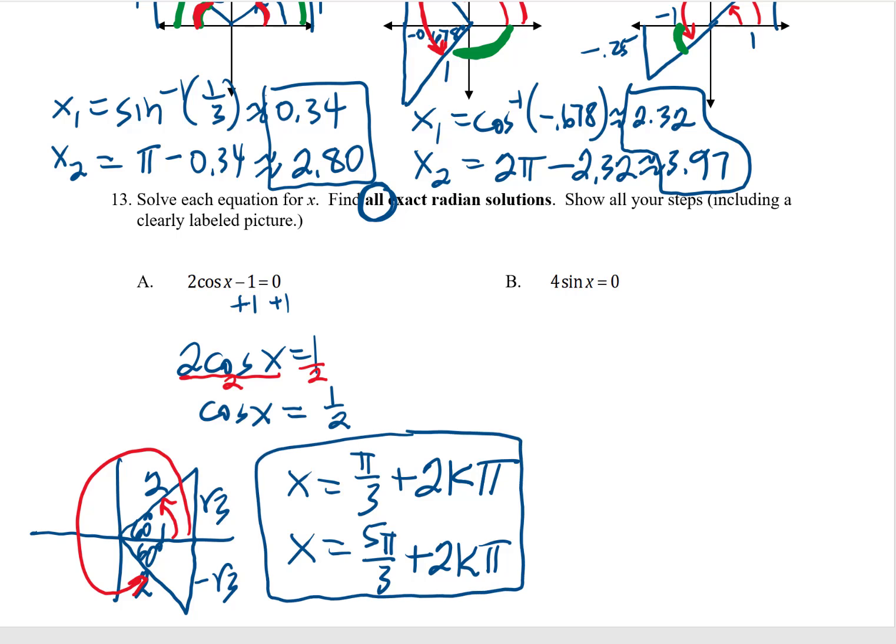And then lastly, 4 sine x equals 0. I'll have to divide by 4, although that's pretty simple. That leaves me with sine x equals 0. Same strategy. Find all the solutions within one period. Now, when I see a 0, I'm thinking this is going to be a unit circle problem. Sine is the b coordinate. Where do I have a b coordinate of 0? It happens right here at 1, 0. And it happens right here at negative 1, 0. So the only solutions within one full period would be 0 itself, 0 radians, and then π radians.